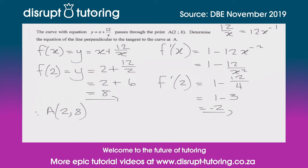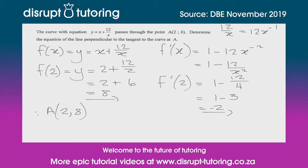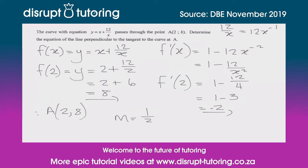They haven't asked for a line parallel to the tangent — they've said perpendicular. So the gradient of this new line we're trying to find is going to be the negative reciprocal. We flip the fraction and change the sign, giving us 1 over 2. This is because (1/2) times (−2) equals −1, and two lines are perpendicular when the product of their gradients equals minus 1.